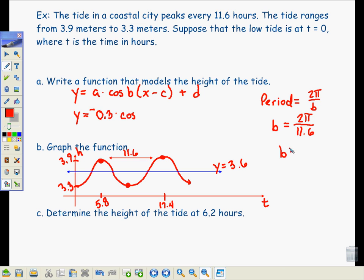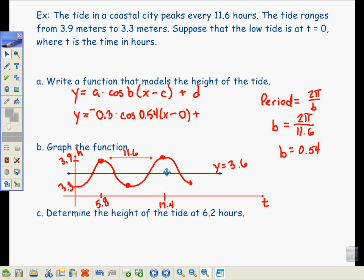0.54 times x minus the phase shift. Now, we're saying this starts in the down position, just like cosine. It's not that this cosine graph has been moved this way or has been moved this way. It's starting in the down position at time equals 0. So the phase shift is 0. Plus the vertical shift. How far up has this been shifted? Well, it was down here. It's been moved up to go around this median line at 3.6. So just like the graph went up, that line also went up 3.6 exactly. So the vertical shift is 3.6.